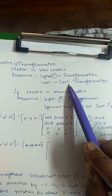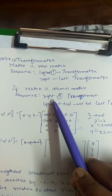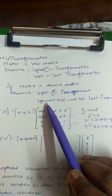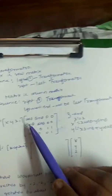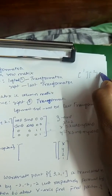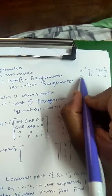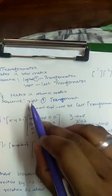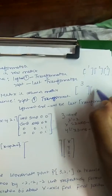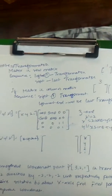If the matrix is a column matrix, the sequence is reversed — towards the rightmost side it will be the first transformation matrix, and towards the leftmost side it will be the last transformation matrix. For example, if it is a row matrix with first, second, and third transformations, the left-hand side will be the first transformation matrix and the right-hand side will be the last.